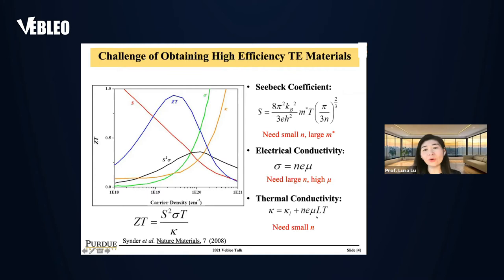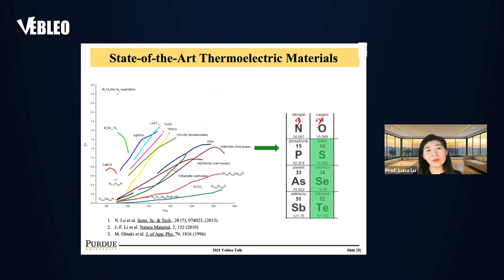One approach being pursued in the community is: how can we use nanostructuring to decouple electron and phonon transport? We can thereby drastically increase electrical conductivity without deteriorating thermal conductivity — by reducing phonon thermal conductivity. That's another thing we'll discuss in this talk.